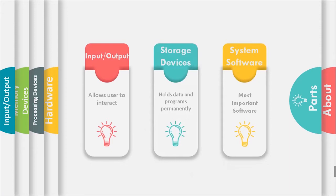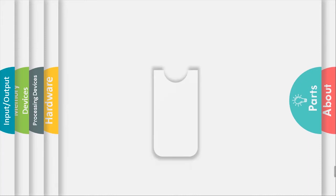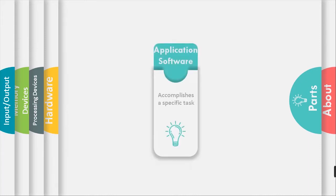System software is the most important software. Application software accomplishes a specific task.